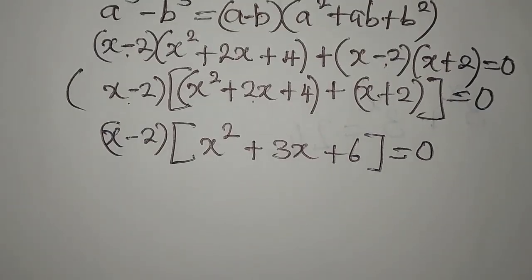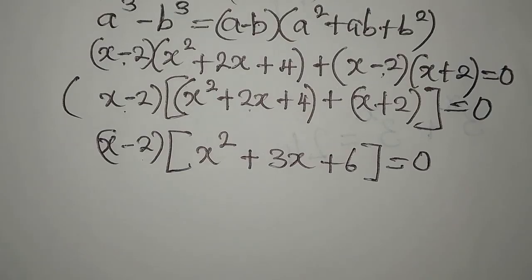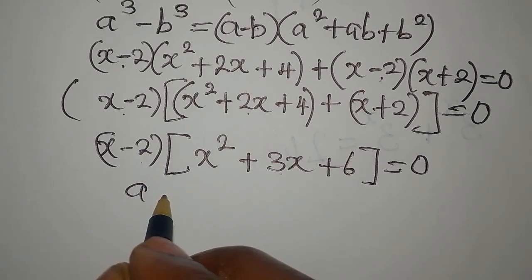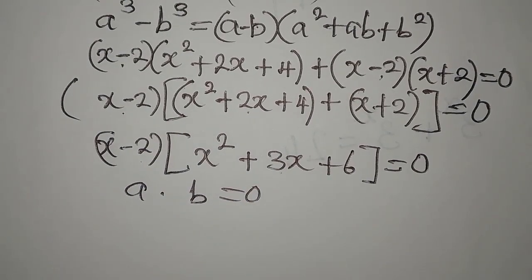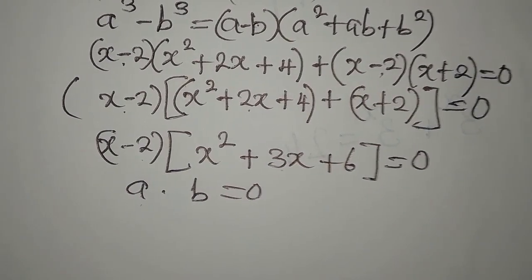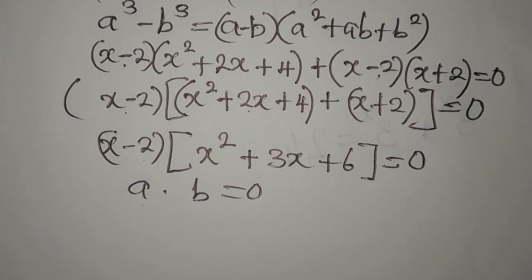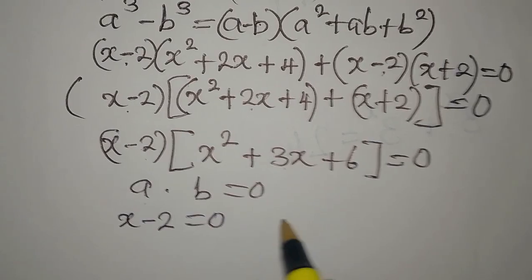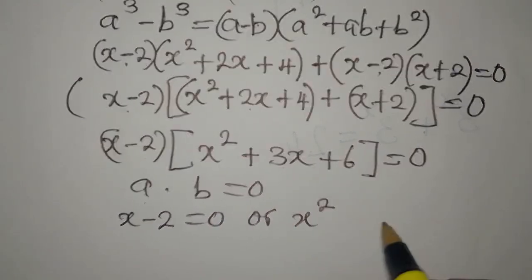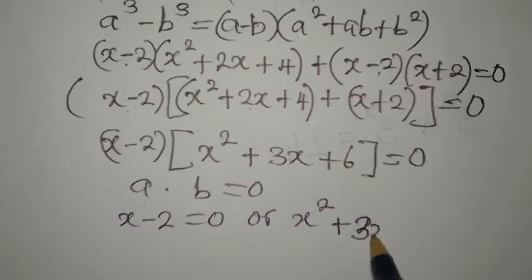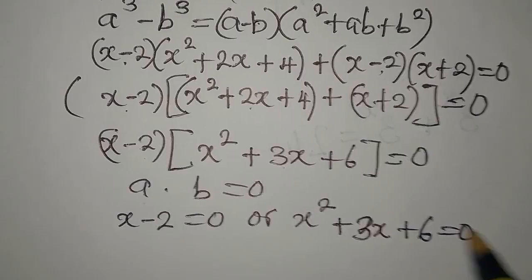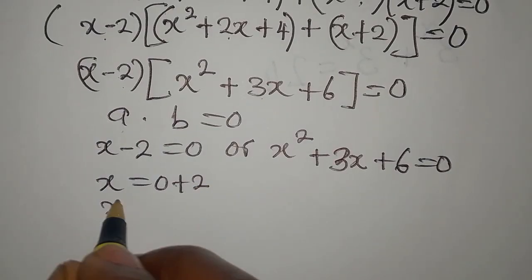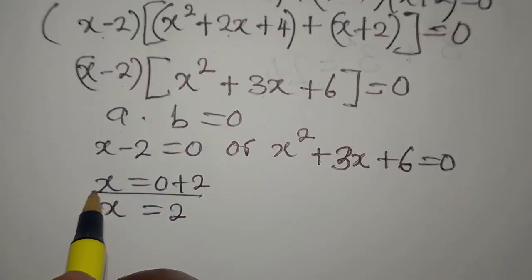We're multiplying two terms that equal zero, so one of them must be zero. Either x - 2 = 0, which gives x = 2 as one solution, or x² + 3x + 6 = 0, which we need to solve separately for more solutions.